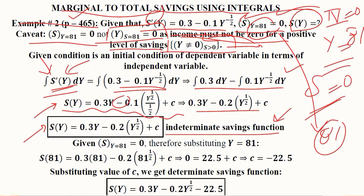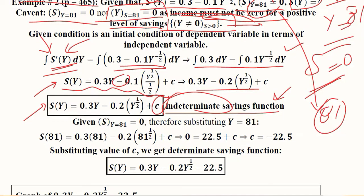This is the indeterminate or indefinite savings function because of this c, which is the arbitrary constant developed due to integration. If we can get rid of this c, we can get the definite or determinate solution of the savings function.